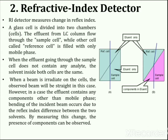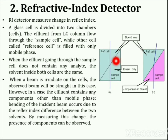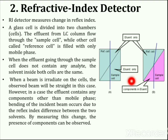The next detector is the refractive index detector. It measures changes in refractive index. This type of detector contains a glass cell which is divided into two chambers or cells. The eluent flowing from the liquid chromatography column flows through the sample cell, while the other cell, called the reference cell, is filled with only mobile phase. When the eluent going through the sample cell does not contain any analyte, the solvent inside both cells is the same.